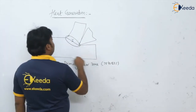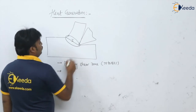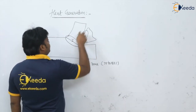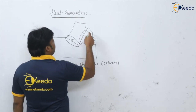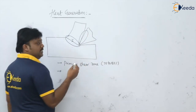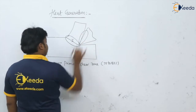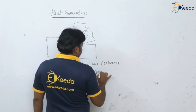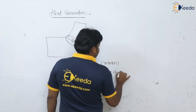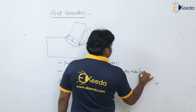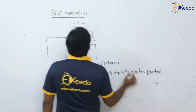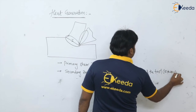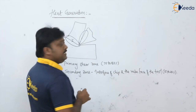The second zone relates to the energy going into friction as the chip moves on the rake face. Because of that friction, we have heat energy up to 15 to 20 percent. This is the secondary zone, which is the interface of the chip and the rake face of the tool, where around 15 to 20 percent of energy is dissipated.